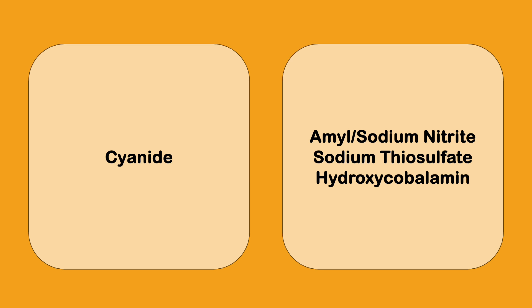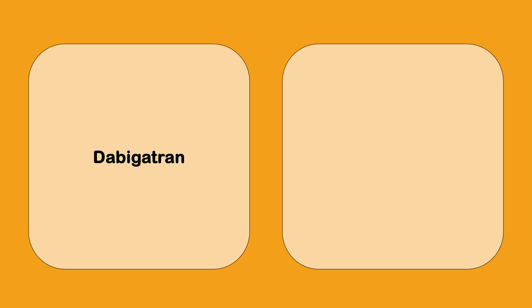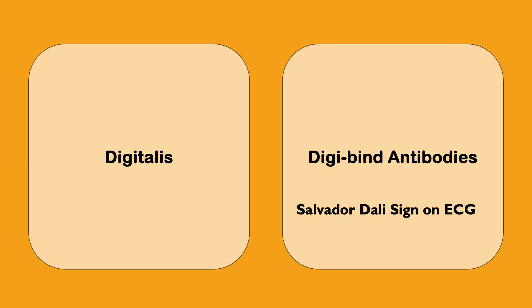Cyanide, the antidote is amyl nitrite, sodium thiosulfate, and a beautiful hydroxycobalamin which is vitamin B12. Dabigatran is widely used nowadays and the reversal agent for this is the monoclonal antibody idarucizumab. Digitalis overdose, somebody's coming with digitalis overdose, what you give them is digibind antibodies. A classical ECG association for the exams is the Salvador Dali sign which is like a mustache sign on an ECG.